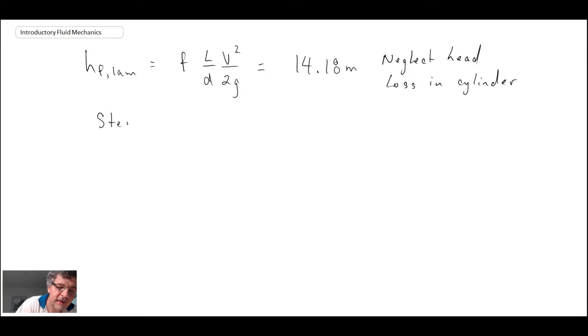So with that, we then go to the steady flow energy equation. We're dealing with laminar flow, and consequently our kinetic energy coefficient α₁ and α₂ is going to be 2.0, and we're assuming V₁ is approximately equal to zero.